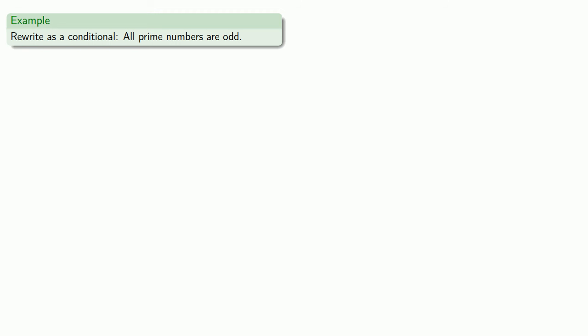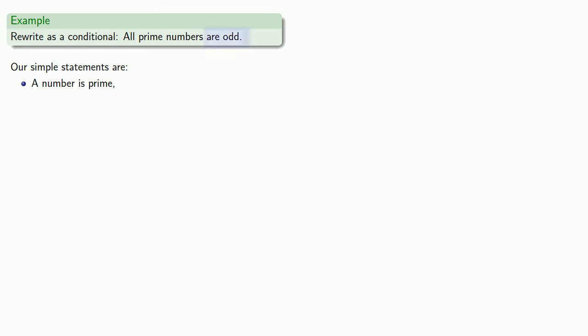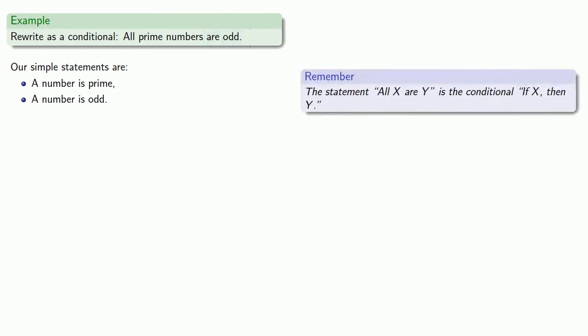Let's try to rewrite as a conditional: 'all prime numbers are odd.' Let's identify our simple statements: a number is prime, and the number is odd. Remember, 'all X are Y' is the conditional 'if X, then Y.' So this gets rewritten as: if a number is prime, then the number is odd.